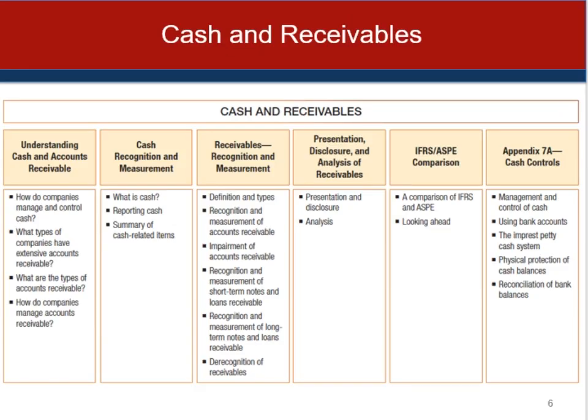The layout of the PowerPoint we're going to talk about today: we'll discuss understanding cash and accounts receivable, management and control of cash in particular. The appendix deals with bank reconciliations as a major way of controlling cash and also covers petty cash transactions. We'll talk about different types of accounts receivable, how companies manage them, cash recognition and measurement — what exactly qualifies as cash and what doesn't — recognition and measurement of receivables, presentation, disclosure, analysis, differences between IFRS and ASPE, and Appendix 7a on cash controls.